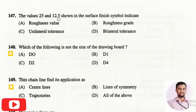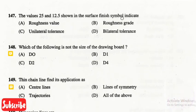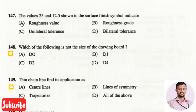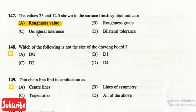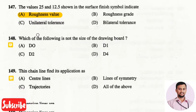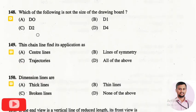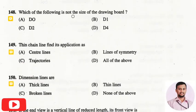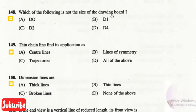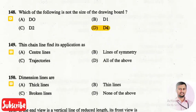The next question is: the values 25 and 12.5 shown in the surface finish symbol indicate? The right answer is option one, that is roughness value. The next question is: which of the following is not a size of drawing board? The right answer is option four, that is D4.